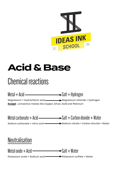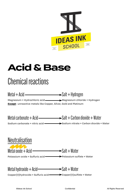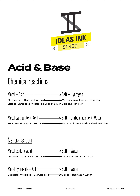The last two types of acidic reactions are known as neutralization reactions. When a metal oxide reacts with an acid, a salt and water are produced. For instance, potassium oxide reacts with sulfuric acid to produce potassium sulfate and water. Similarly, when a metal hydroxide reacts with an acid, a salt and water are produced. For instance, when copper(II) hydroxide reacts with sulfuric acid, copper(II) sulfate and water are produced.